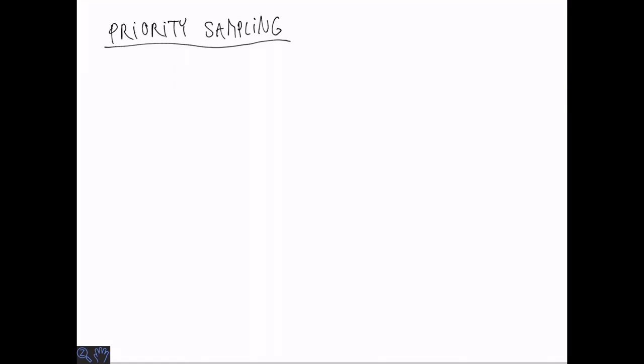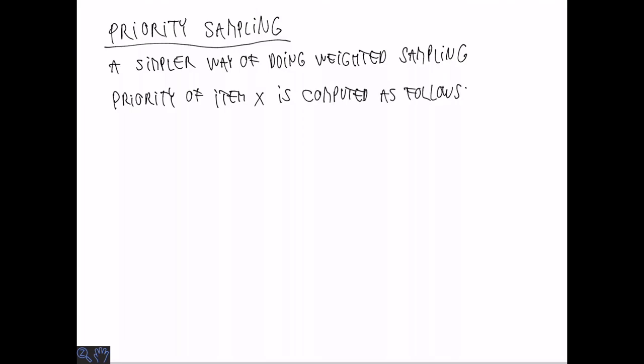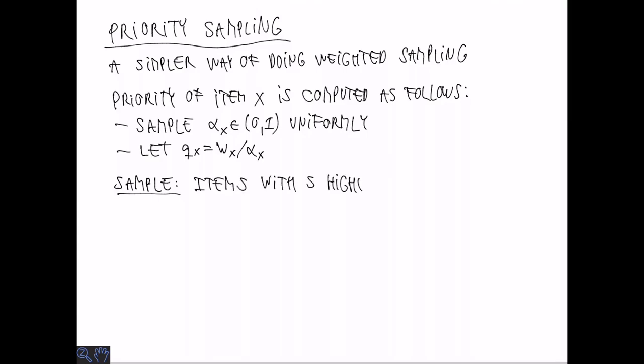The final topic of this lecture is priority sampling, which is a simpler way of doing weighted random sampling. The idea is to assign to each element a priority. So item x gets a priority Qx, that is computed as follows. We sample a random value, alpha x, in the interval 0 to 1, uniformly. Then Qx is simply the weight divided by alpha x. So we see that higher weight elements tend to have higher priorities, but even low weight elements can have a very high priority. Now the sample is simply the s items that have the highest priorities. This is extremely simple to implement.